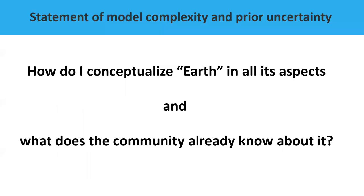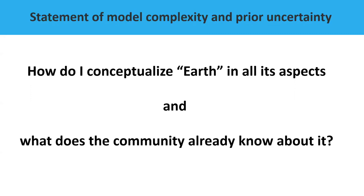Now we move to the second point. We've got an understanding of what we want to do. We now want to conceptualize our Earth in all of its aspects and look at what the community already knows about it. It's not that we start from zero. People have studied glaciated valleys before. People have acquired geophysical data in glaciated valleys before. People have ideas of resistivity and how it varies. People have ideas of how much rainfall is in Denmark. So there's a lot of things we already know, and that will determine — together with what we want to predict — the conceptualization in terms of what is the complexity and what's the uncertainty.